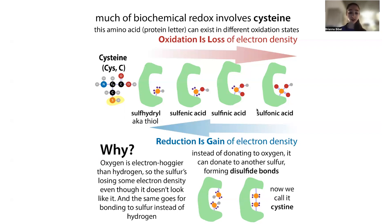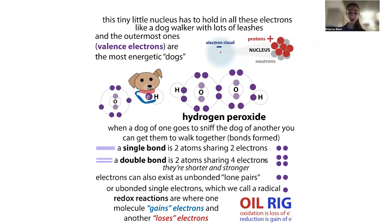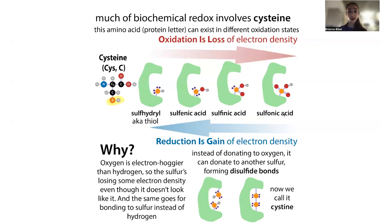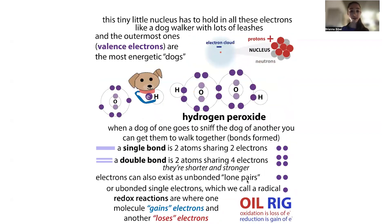Why is this called redox? Why oxidation and reduction? You can remember the mnemonic OIL RIG: oxidation is loss of electrons and reduction is gain of electrons. If you look at disulfide bond formation, you don't really see electrons being gained or lost as full electrons — it's hard to see what's actually happening, especially when forming disulfide bonds. In addition to talking about gaining and losing single electrons, we can talk about gaining and losing electron density. Going back to how atoms form bonds by sharing pairs of electrons and merging their electron clouds, they don't always share fairly — some atoms are going to be more electronegative and hog the shared electrons.